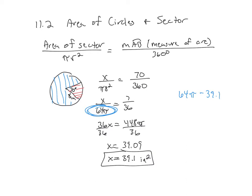So 64 pi minus 39.1, and you get 161.96. Or I think they're technically rounding to the nearest hundredth. So you could do it that way.